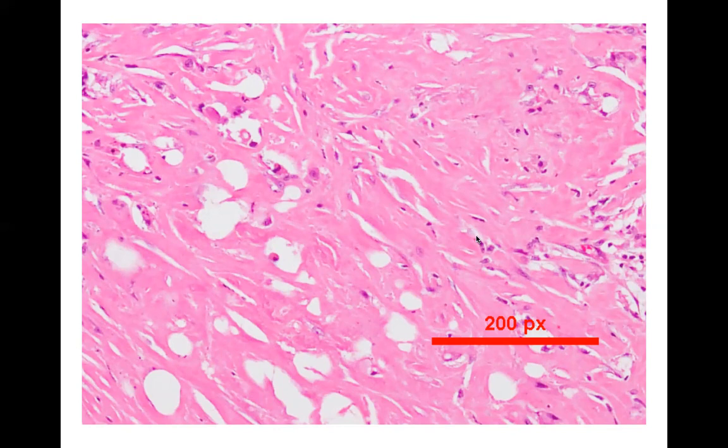These ropey areas are all collagen fibers being produced by the fibrocytes. So you have these cells and then you have abundant collagen in the vicinity of these cells. At times they will be very active and you will see the majority of the connective tissue composed of only collagen fibers; at other times you will see only sparse fibrocytes with little collagen in between. These collagen fibers appear as ropey eosinophilic fibers — they could be dense or light and are generally aligned parallel to each other.